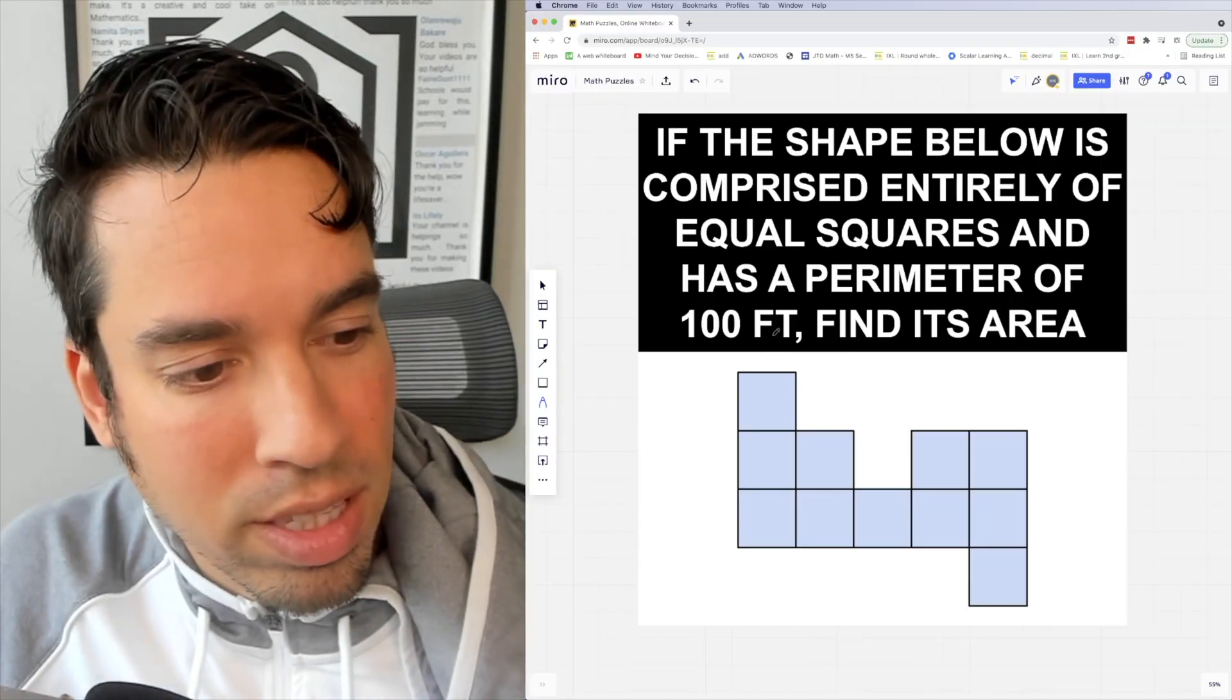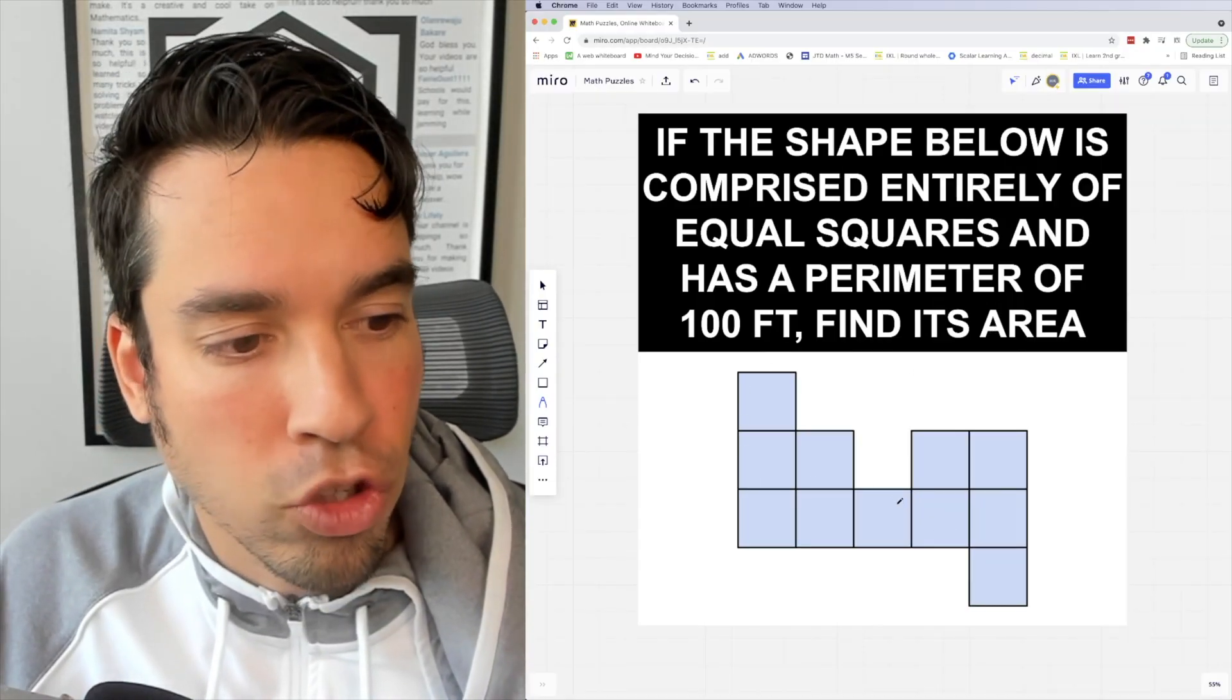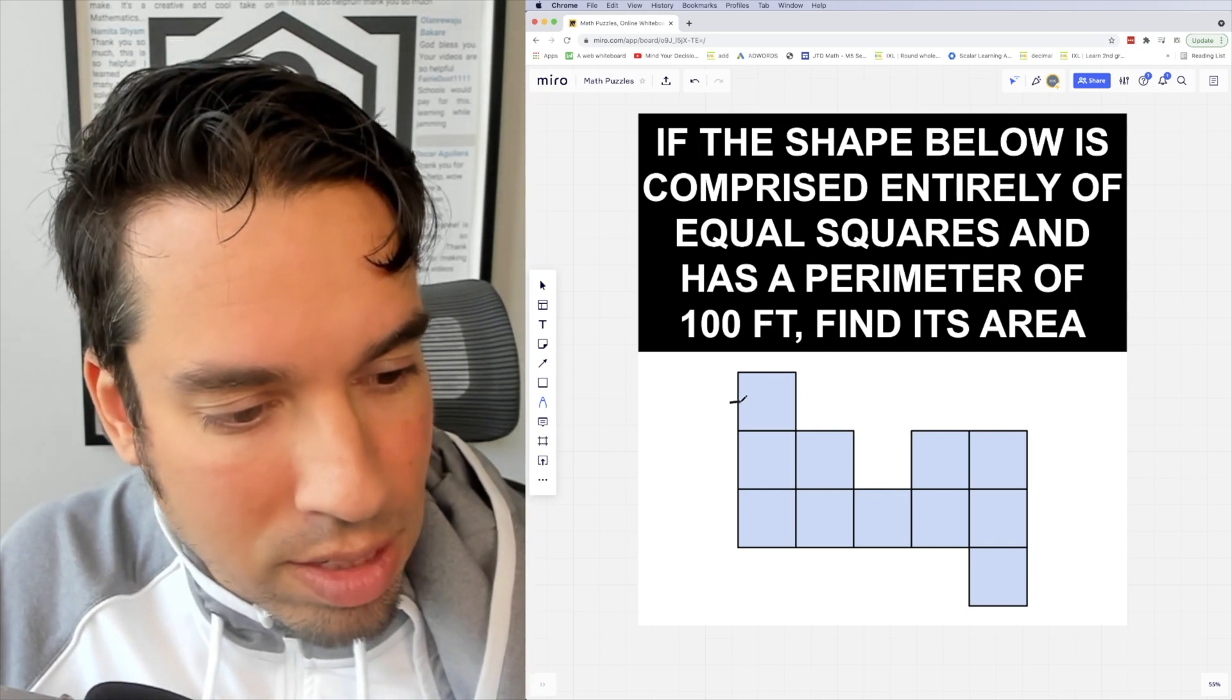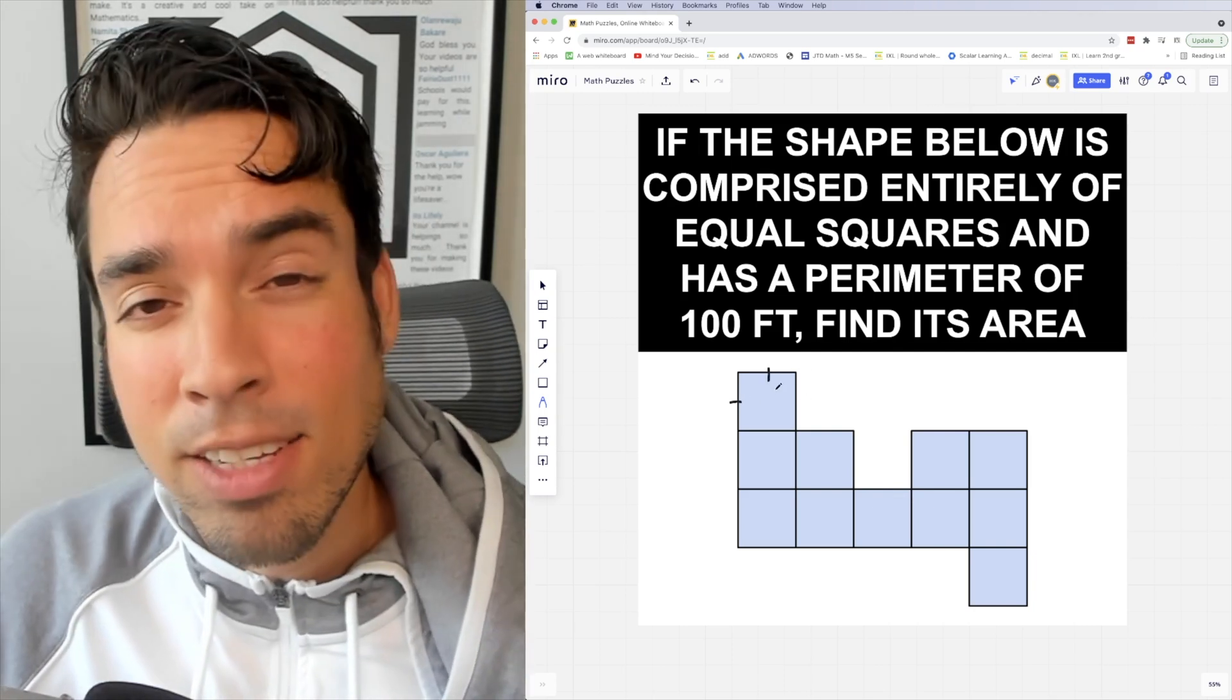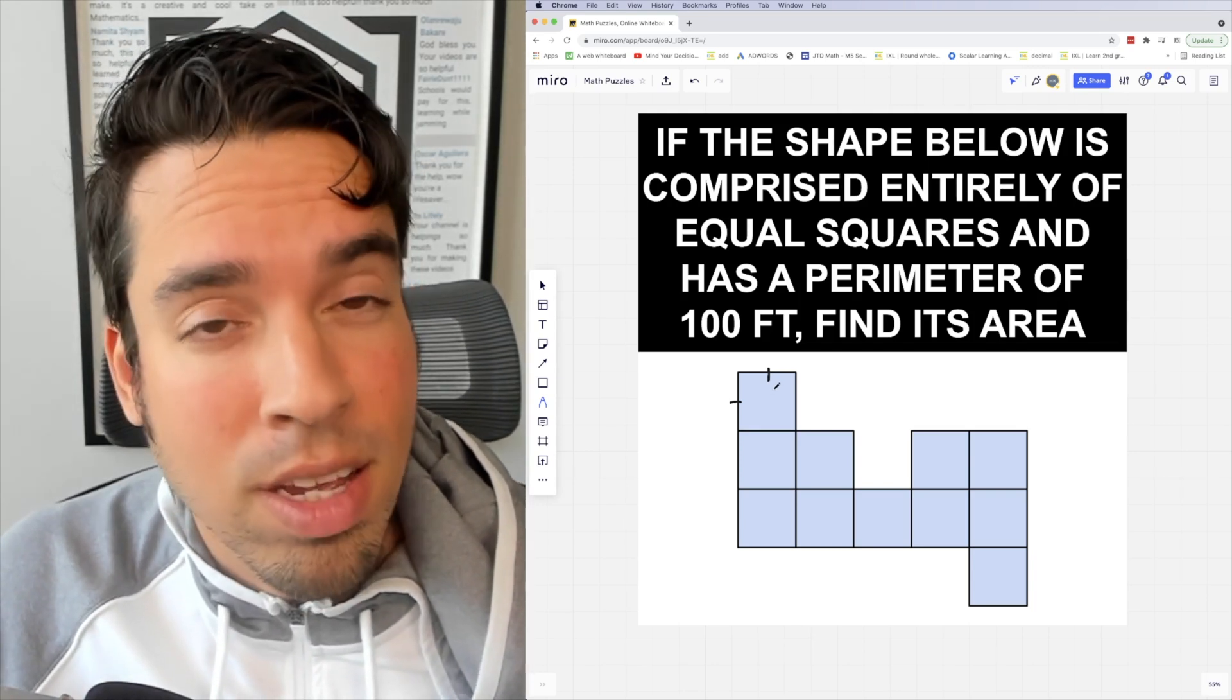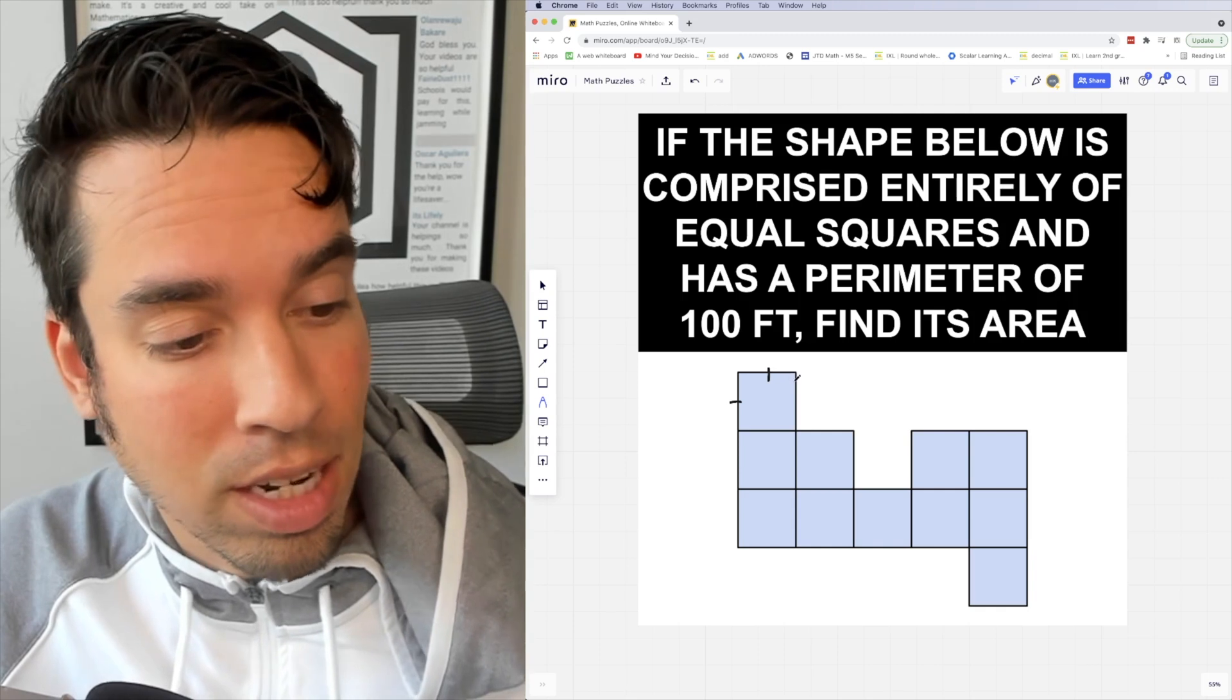So the important part here is that it has a perimeter of 100 feet. And by the way, since these are all equal squares, all of these side lengths are equal. As such, that 100 feet is divided up into a bunch of equal sections. To get the length of each of these sections, we just have to count how many of these segments there are.